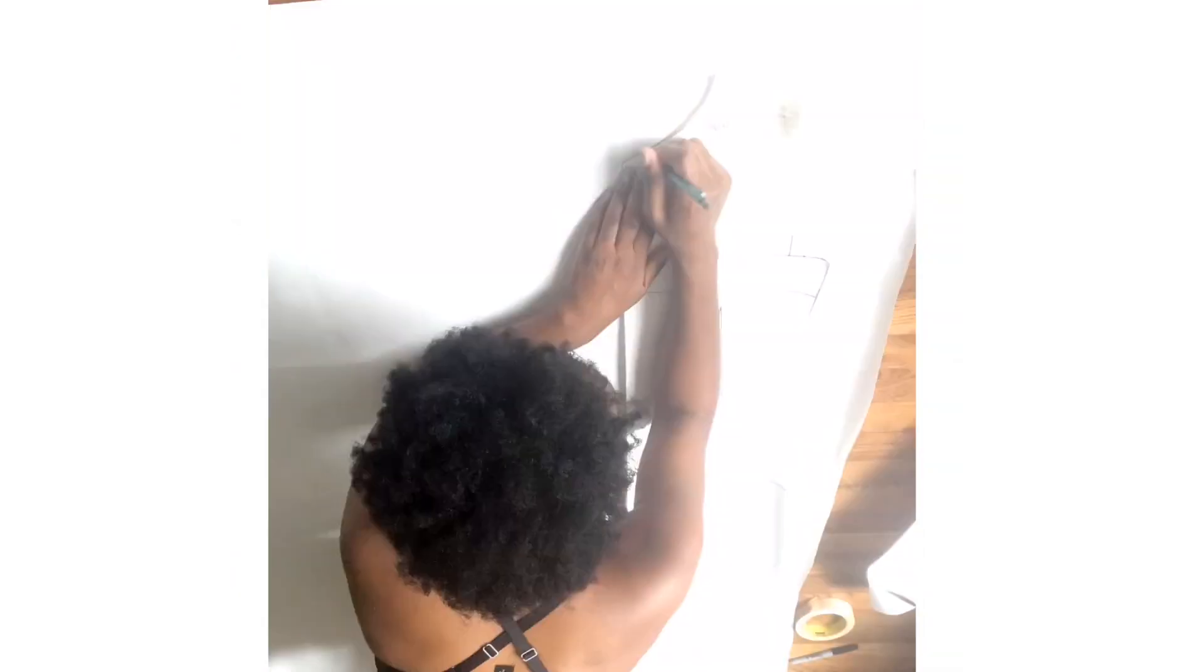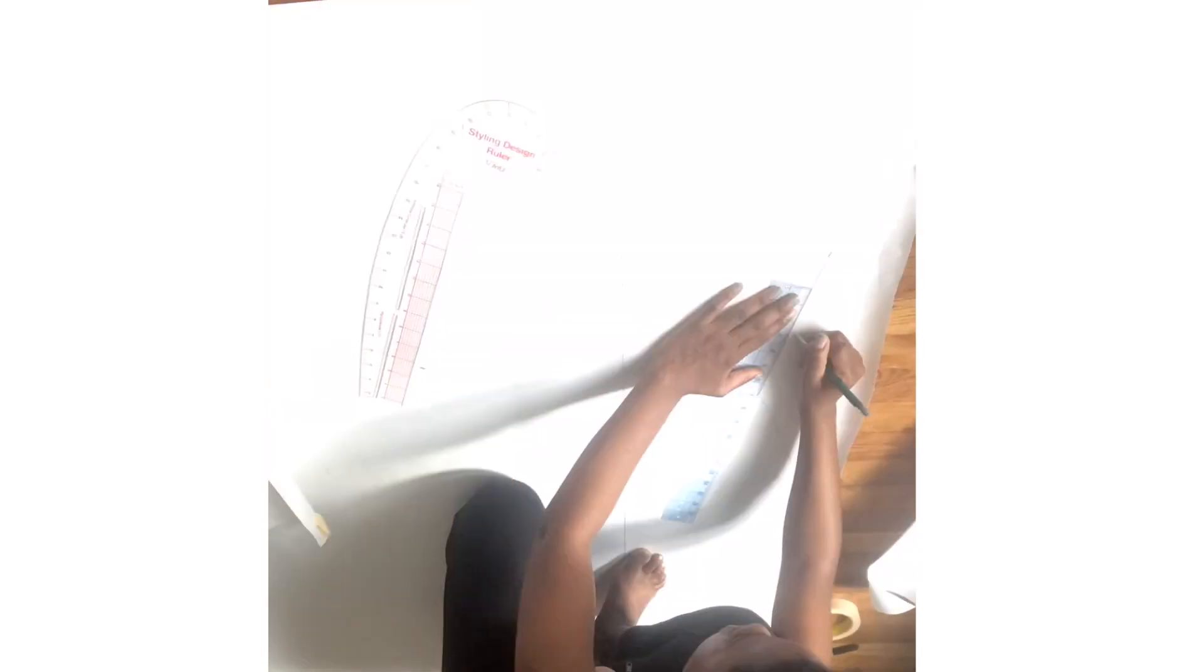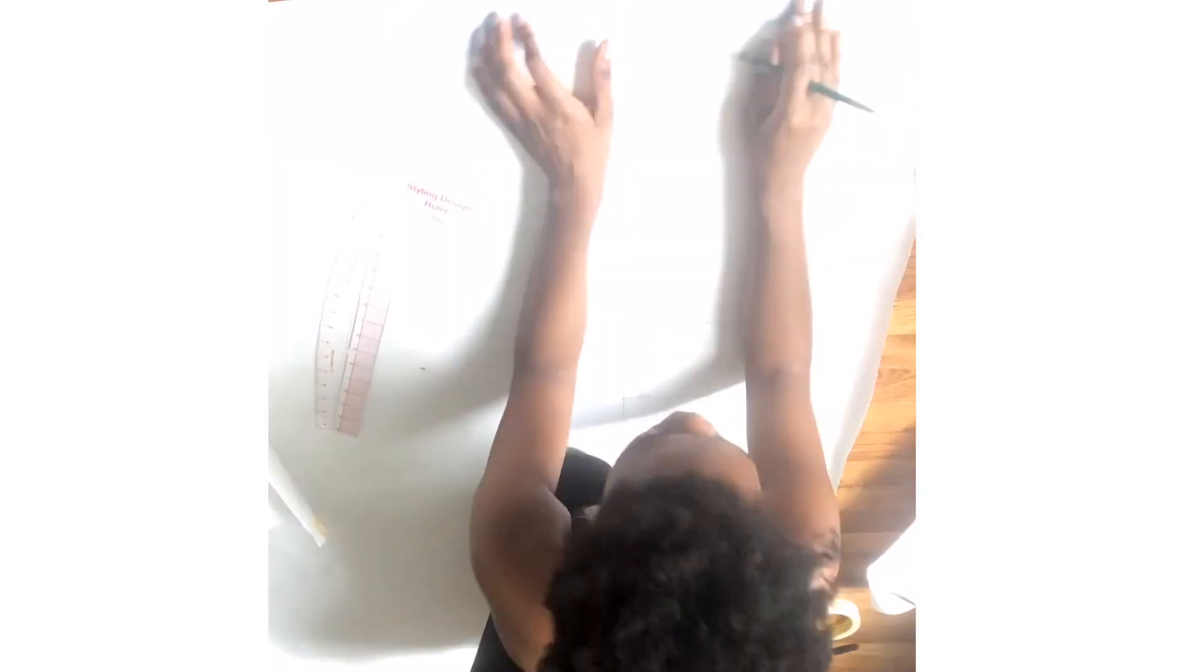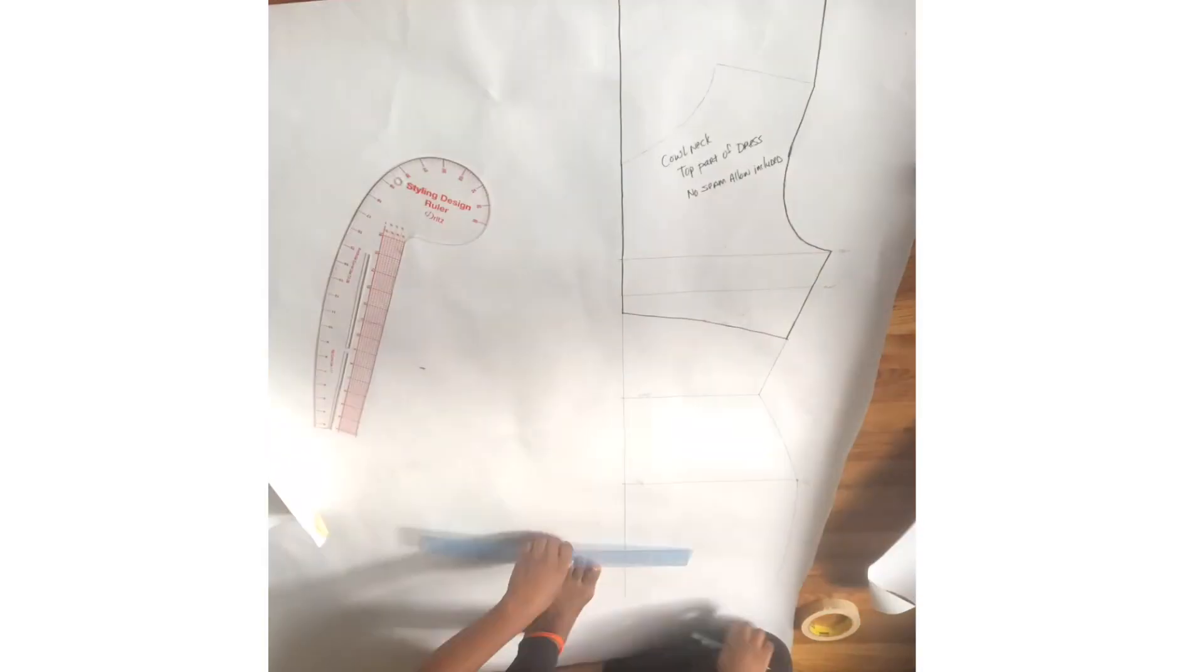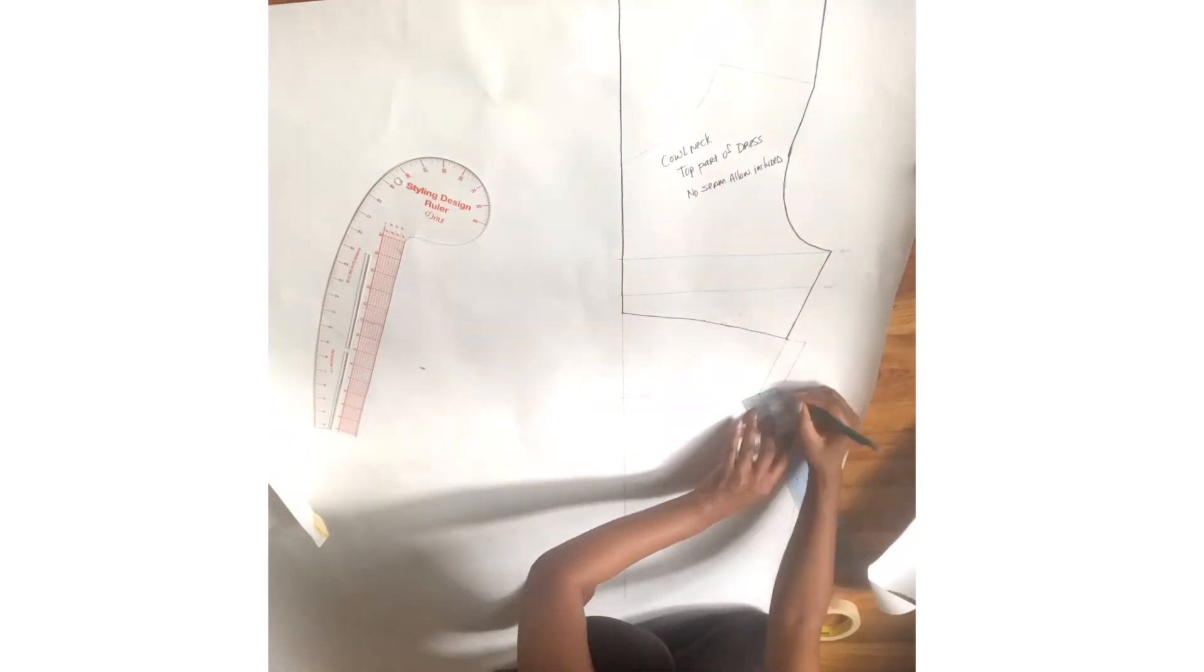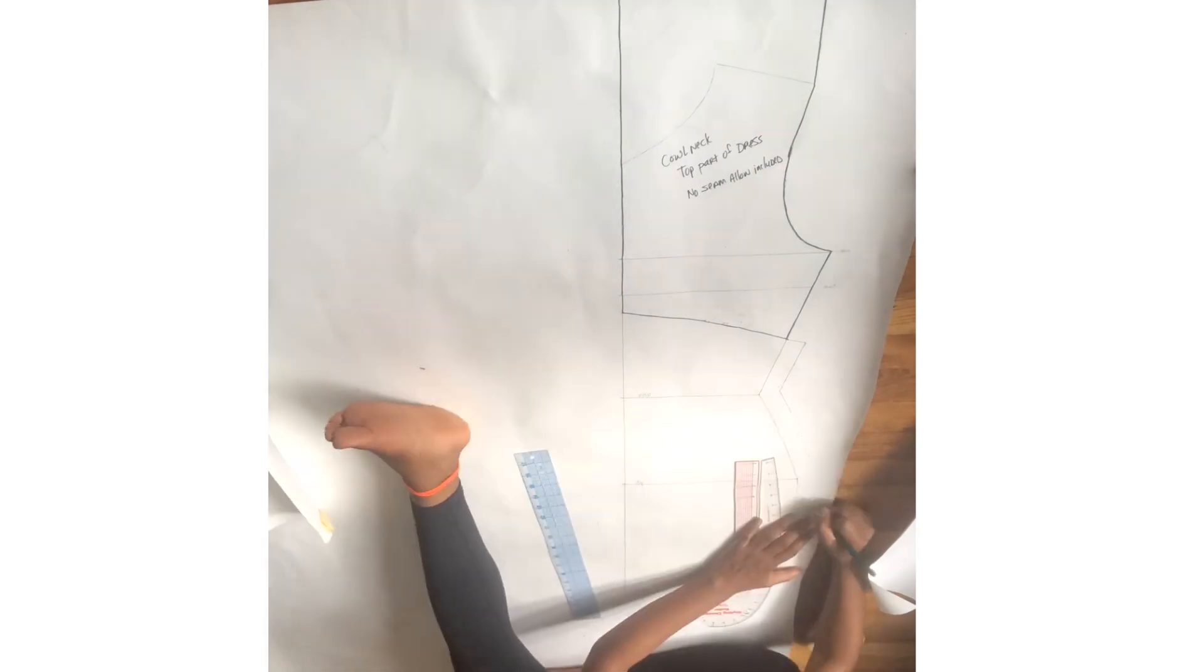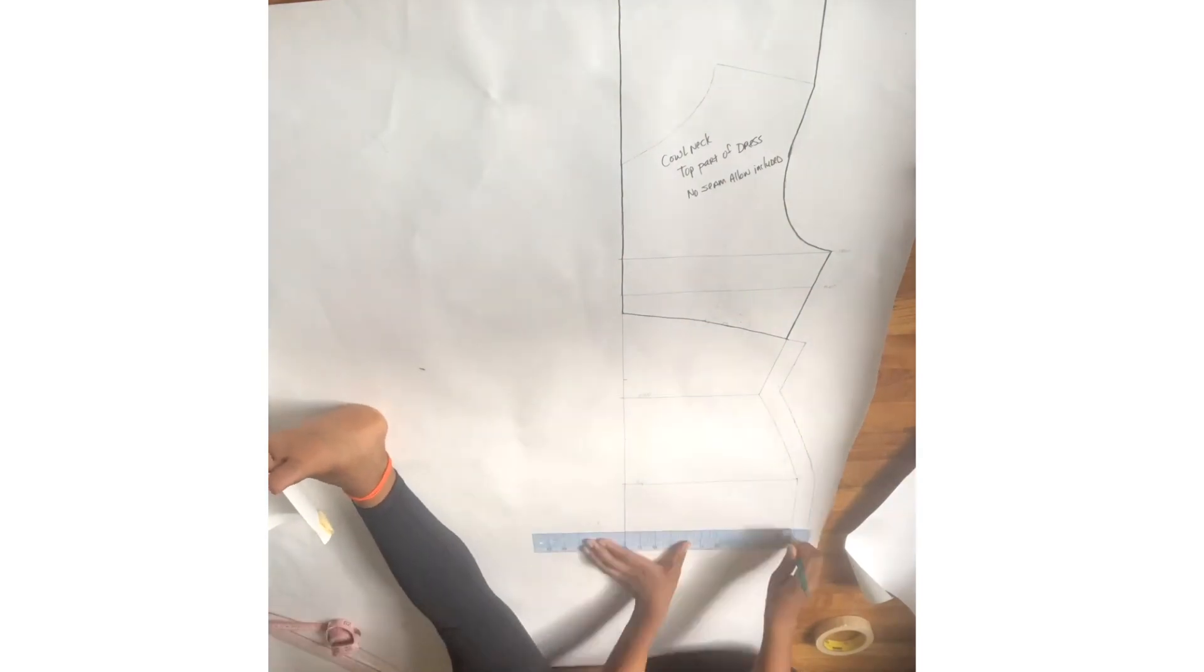Alright, so here I am basically just tracing the front part of a bodice block that I made. I will actually have a tutorial on how to make a bodice block, but that will come later. Then I traced the markings and transferred the markings like the bust, the chest, the waist, and the hip. Then I extended the top part of the bodice block to make up for the cowl neck, and then I added about a one inch space to the side.